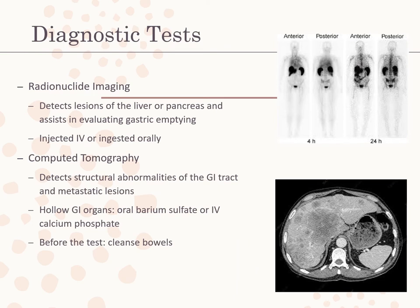Radionuclide imaging detects lesions of the liver or pancreas and assists in evaluating gastric emptying. A radionuclide such as technetium is injected intravenously or ingested orally, and an imaging scanner examines the body organ, demonstrating organ size and defects or lesions such as tumors. Specialized radionuclide studies identify sites of bleeding or inflammation in the GI tract. Radionuclides have rather short half-lives during which they emit radiation, usually less than with diagnostic radiography. Pre-test measures include weighing the client, and the test is contraindicated in pregnant women. Breast milk may be pumped and discarded to keep the nursing child safe.